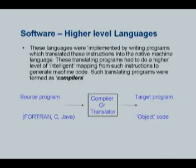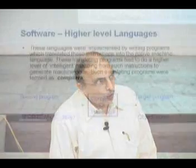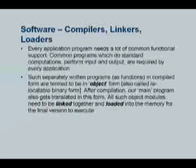People wrote programs to do this translation and these were called compilers. Compilers could translate programs written in higher level languages into machine language, and because they required more intelligent mapping, the translating programs were termed compilers — they don't just assemble instructions, they compile instructions after translating. You push your source program through the compiler and out you get the target program. Actually, the target program is not in direct executable form. The a.out file you see is the final result of a long process. The first process of translation gives you what is known as object code.